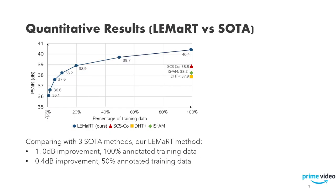We compare the performance of Lamart with three state-of-the-art methods — SCSCO, DHT+, and IS2AM — on the iHarmony4 dataset. We see that using the same amount of annotated training data, our method outperforms them by 1.0 dB. In addition, our method outperforms them by 0.4 dB even when using only 50% of the training data.